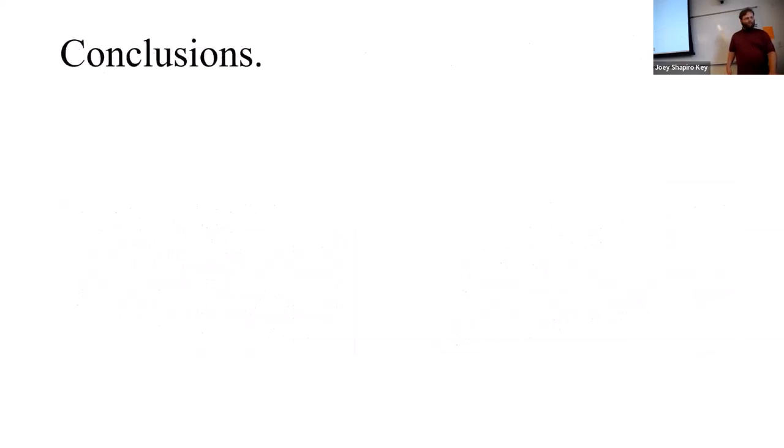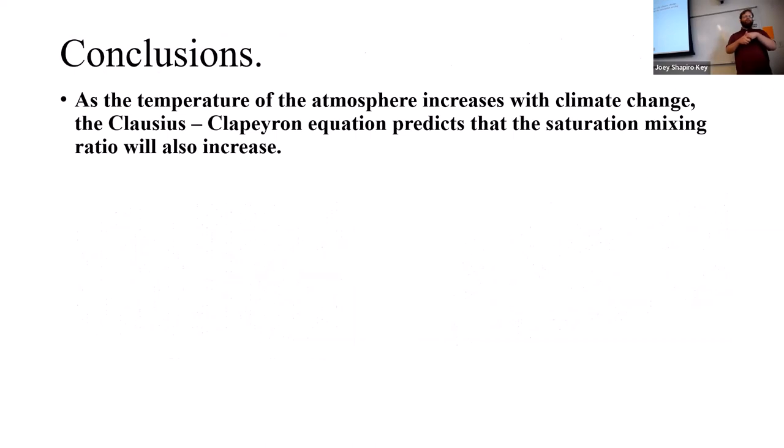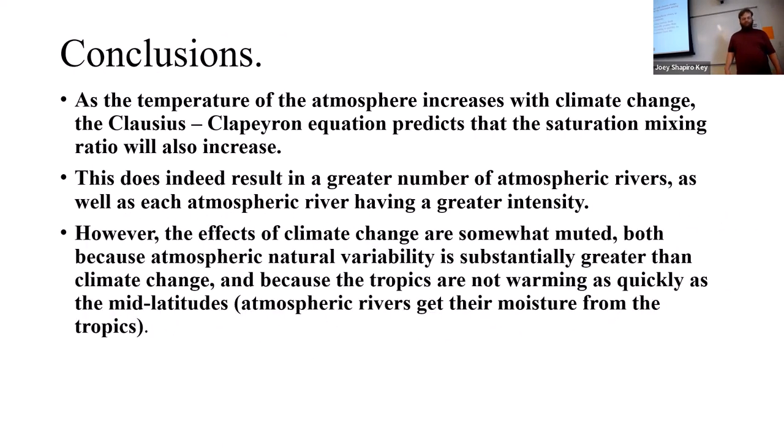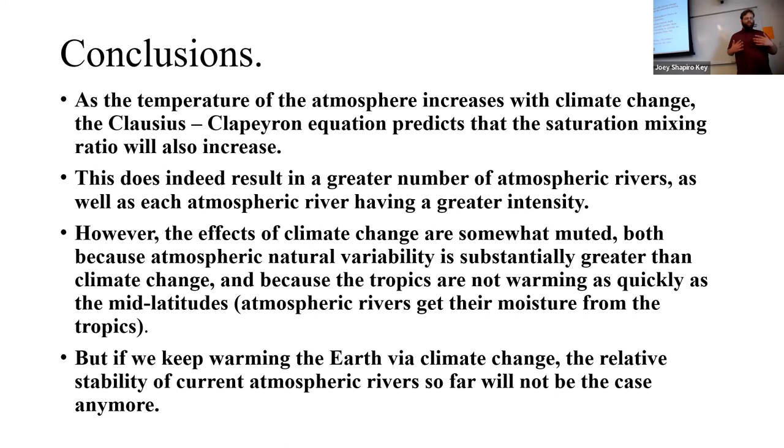As for conclusions, we figured out that as the temperature of the atmosphere increased with climate change, the Clausius-Clapeyron equation predicts that the saturation mixing ratio also increases, which does indeed result in more atmospheric rivers and them having a greater intensity. But, the effects of climate change are somewhat muted because the atmospheric natural variability is greater than climate change, and because the tropics are just not warming as quickly as the mid-latitudes. So, the atmospheric rivers get their moisture from the tropics, so the tropic temperature matters a lot more here. But, if we keep warming the way of climate change, the relative stability for atmospheric rivers will not be the case anymore.